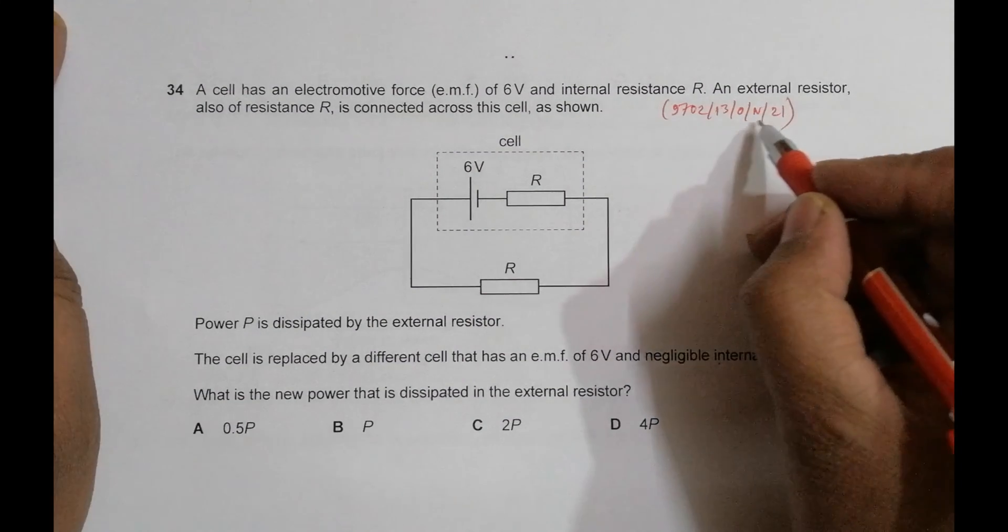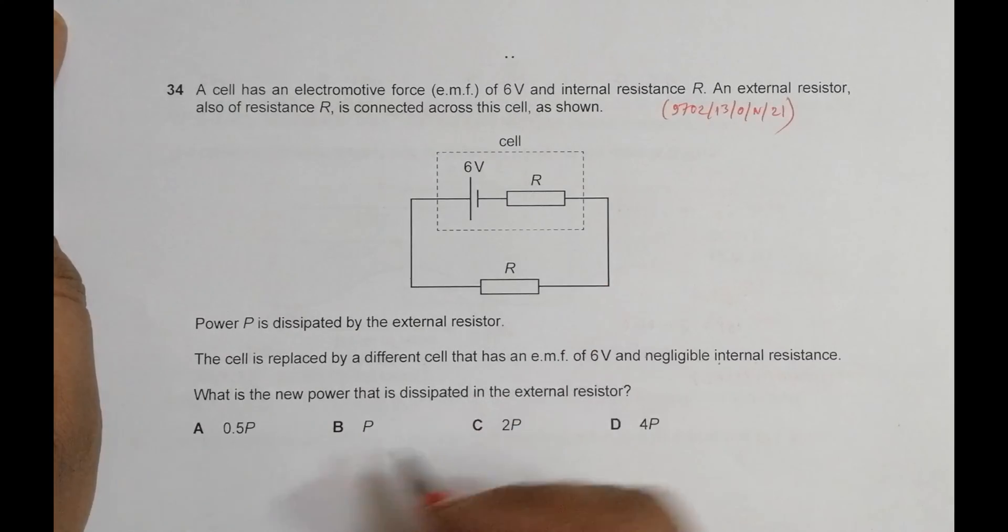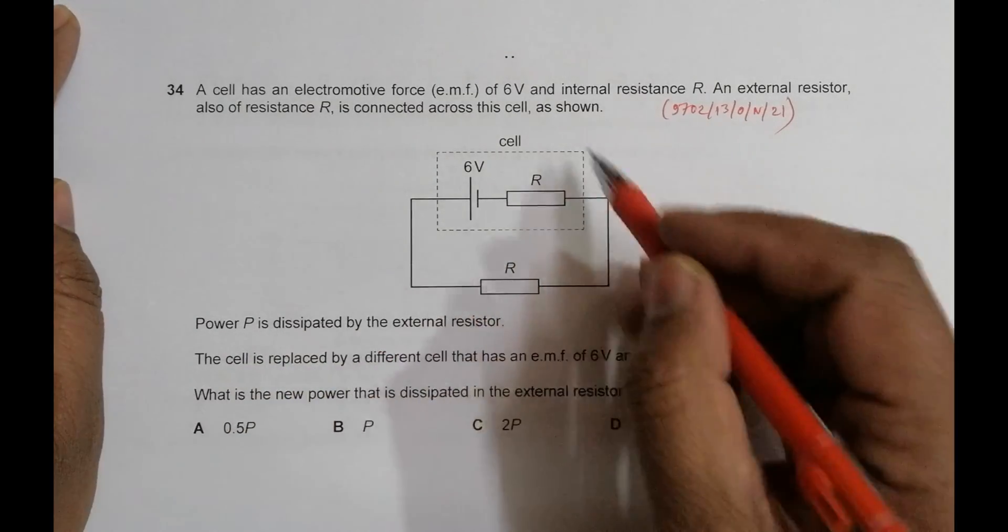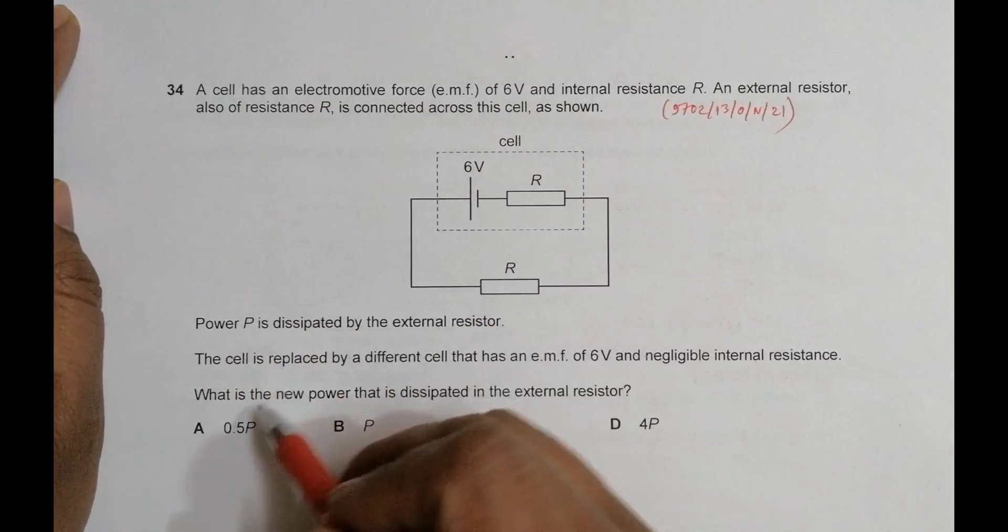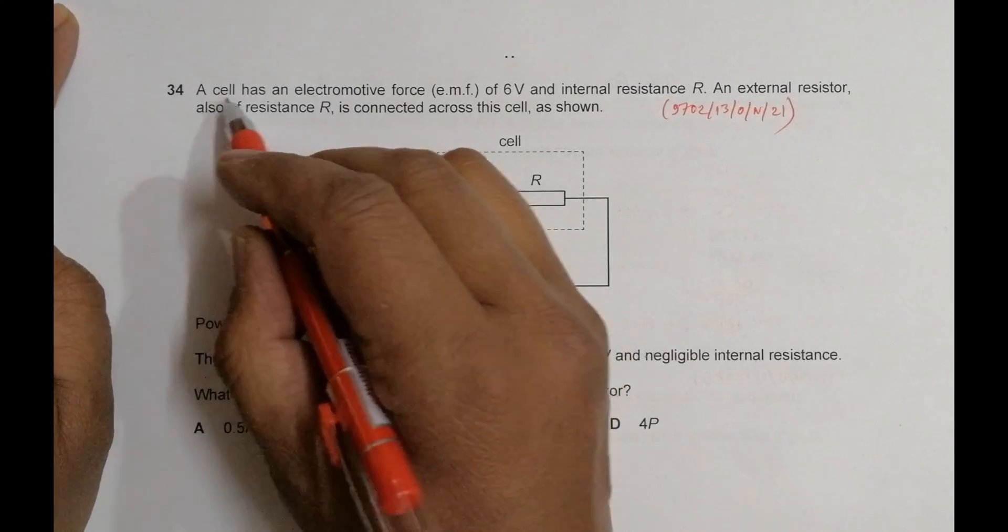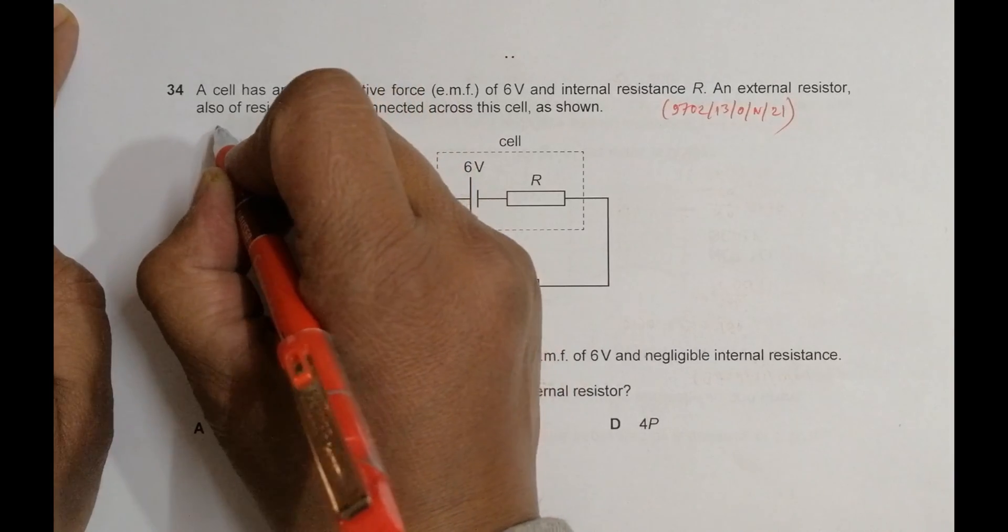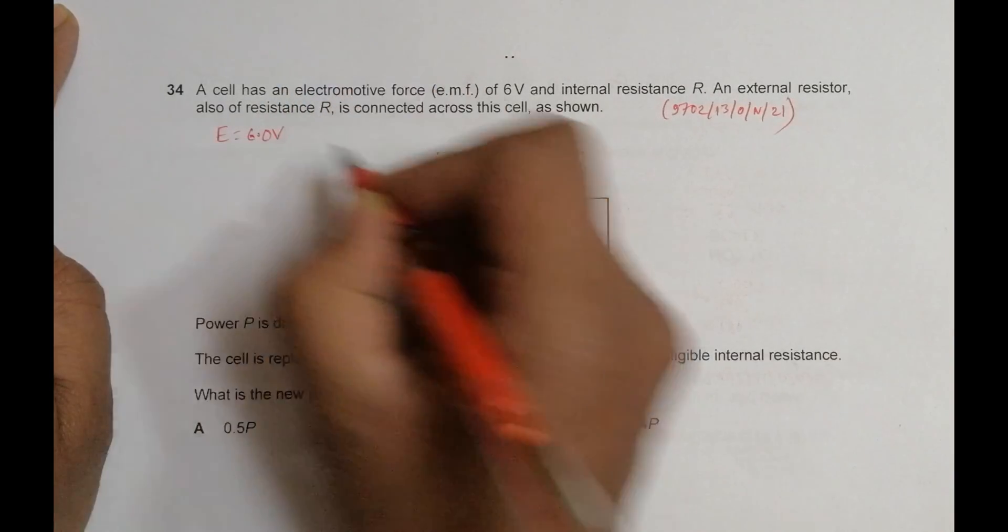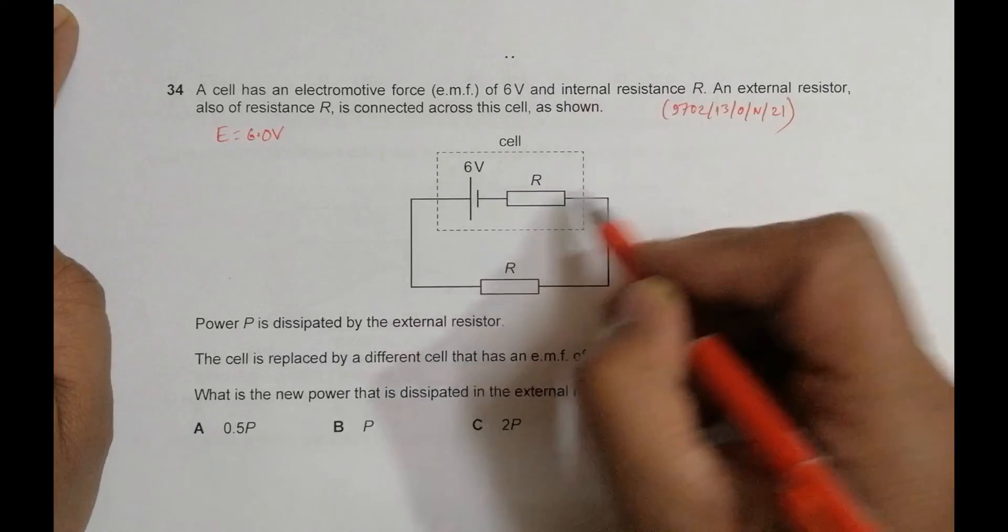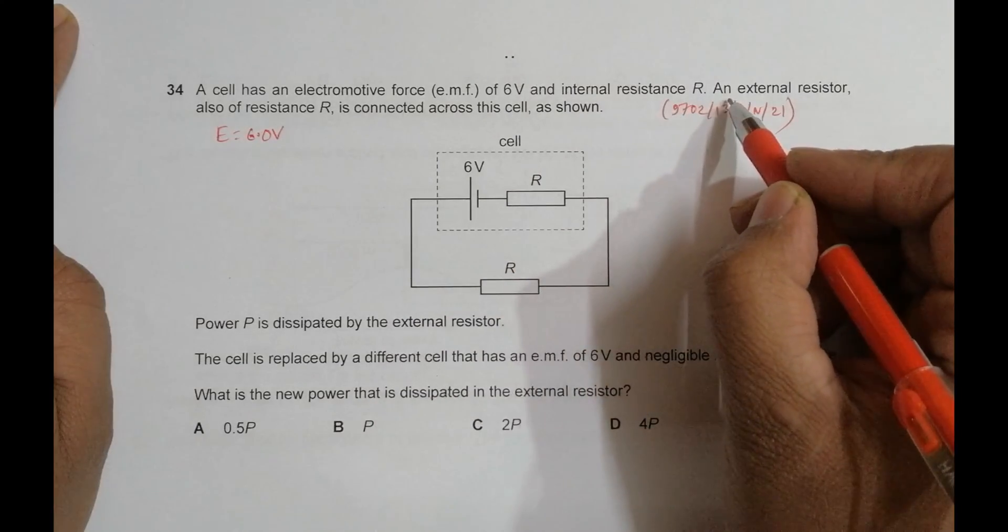Hello folks, this is 2021 October November paper 13, question number 34. A cell has an electromotive force (EMF) of 6 volts and internal resistance R. An external resistor, also of resistance R, is connected across the cell.